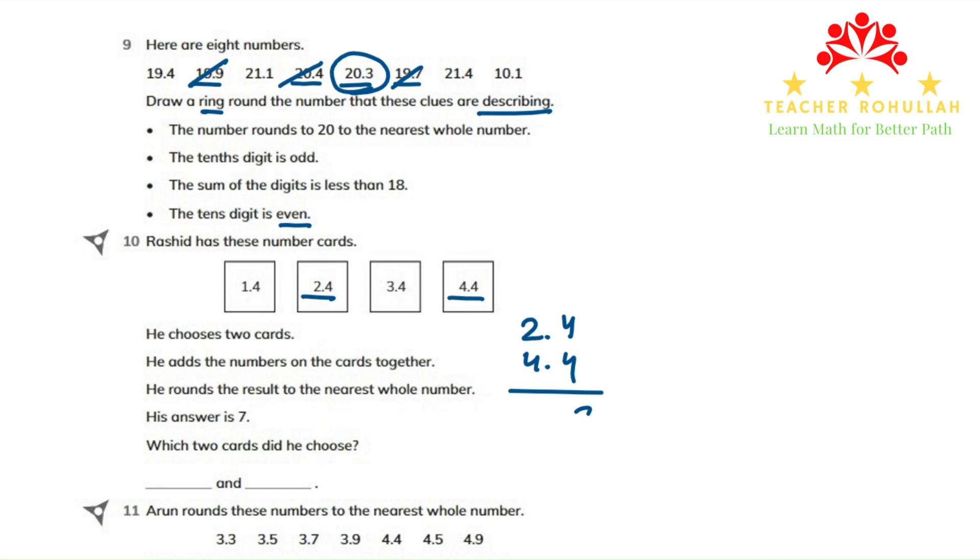4 plus 4 is 8, bring down the decimal point, and 2 plus 4 is 6. So the number we got is 6.8. If we round 6.8, it rounds up to 7.